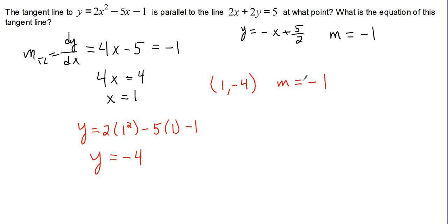We can use point-slope form: y minus negative 4, or y plus 4, equals negative 1 times (x minus 1). If we want to convert this into slope-intercept form, which isn't necessary, we have y equals negative x plus 1, and then we're subtracting 3 from that, so it should be negative x minus 3.